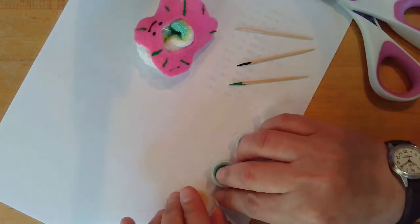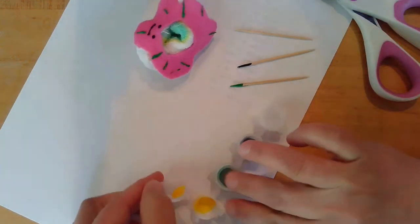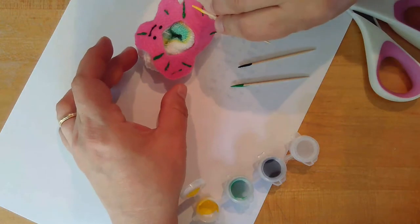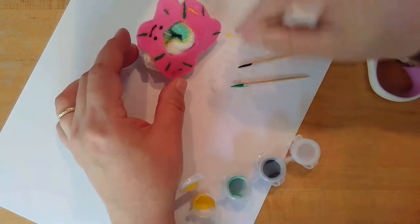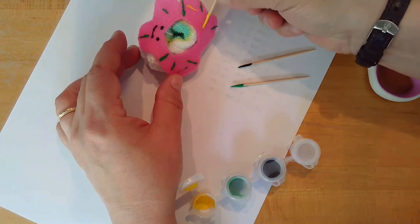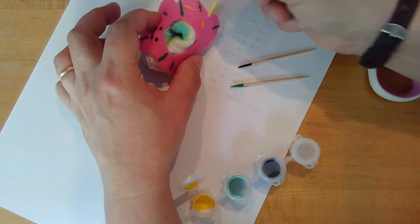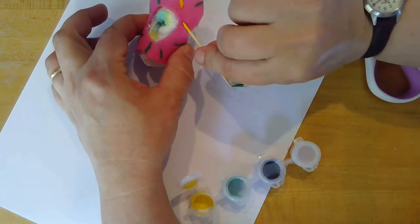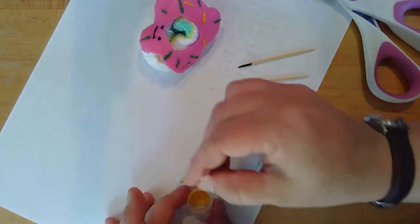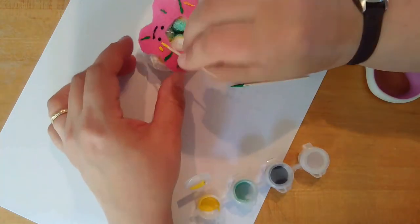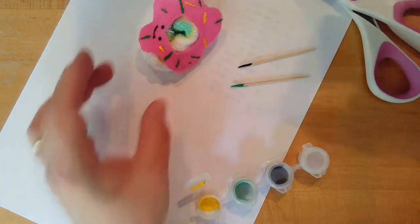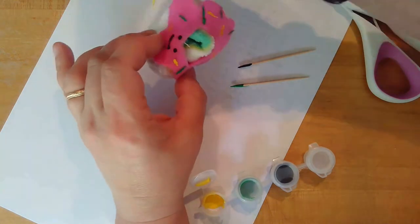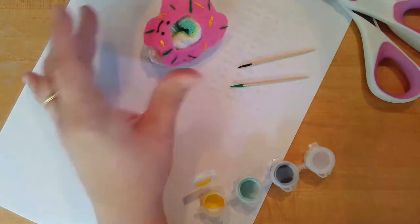All right, now I'm going to do some yellow sprinkles. And for this one, I'm just doing the other end of my glue toothpick so we don't waste. Adding some yellow.